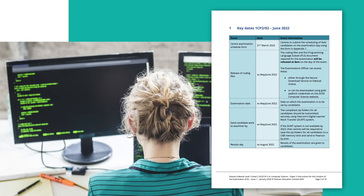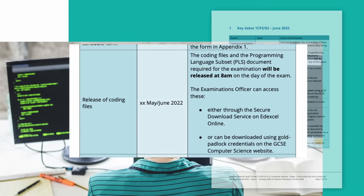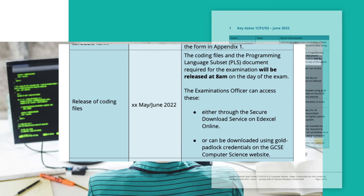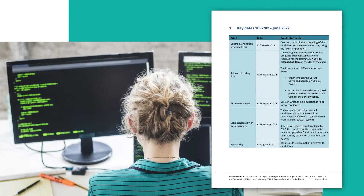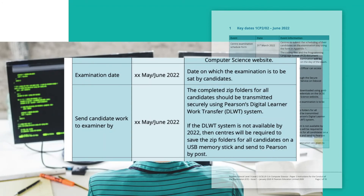We will release coding files for the assessment on the morning of the day of the exam, and there are several different ways these can be accessed by the exams officer or the designated person in the center. The examination date and the completed zip folders for all candidates should be transmitted securely using the digital learner work transfer system. More details will come through later on. There is also a fallback option: if the system is not available, it can be done via a memory stick posted to Pearson.